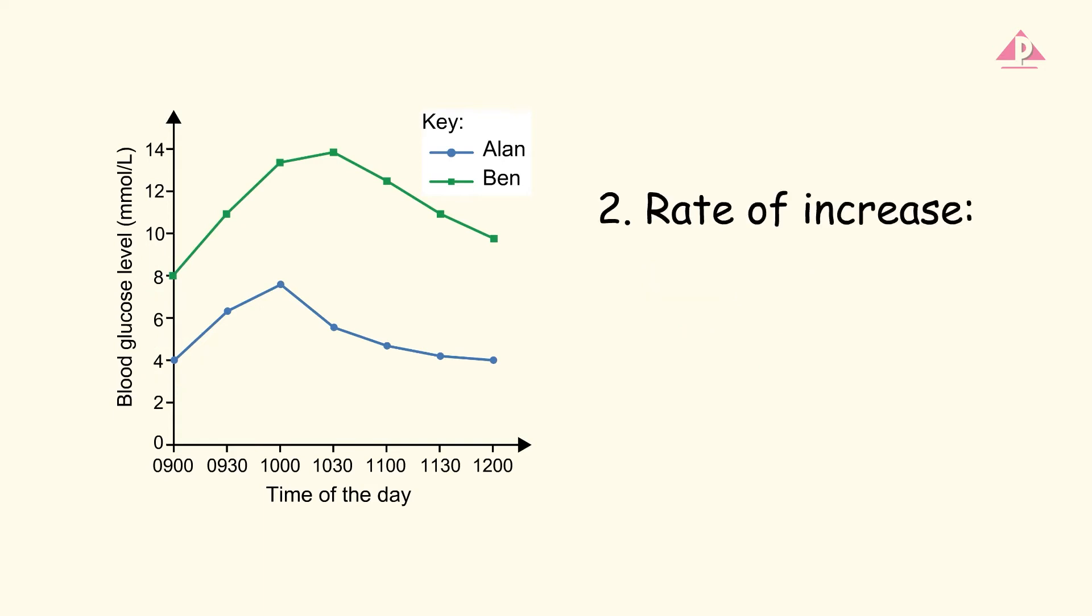Then, compare the slopes of different lines, which indicate the rates at which variables increase or decrease. Ben's blood glucose level increased faster than Alan's.